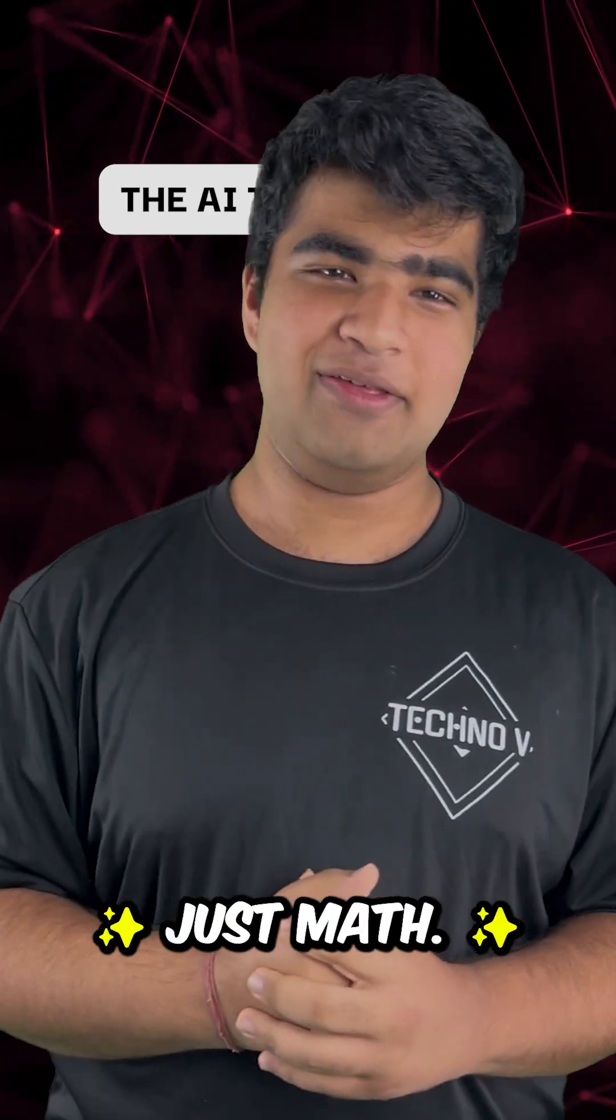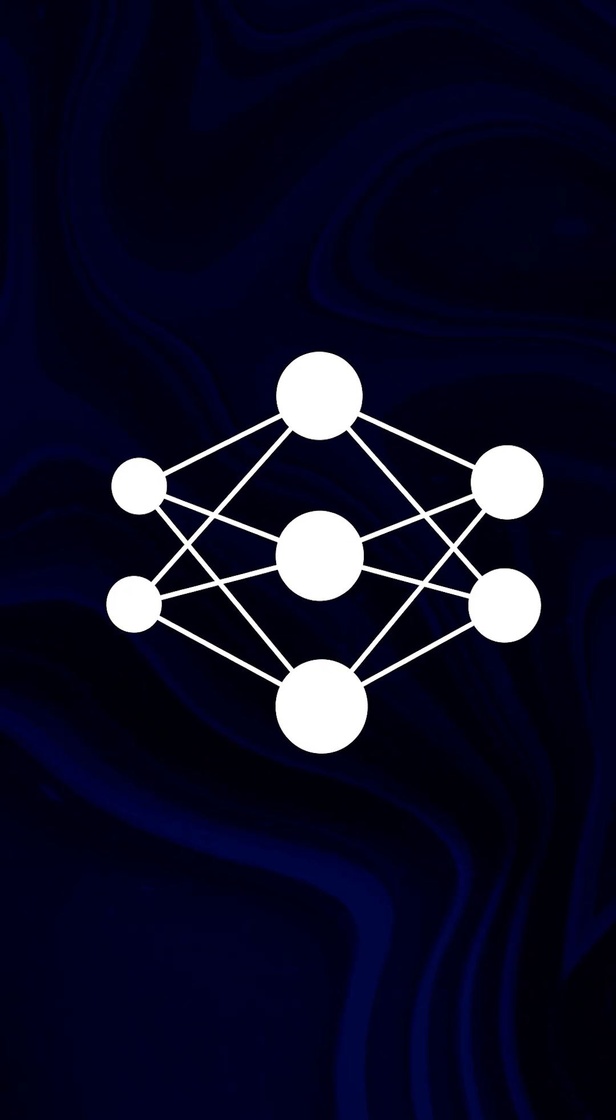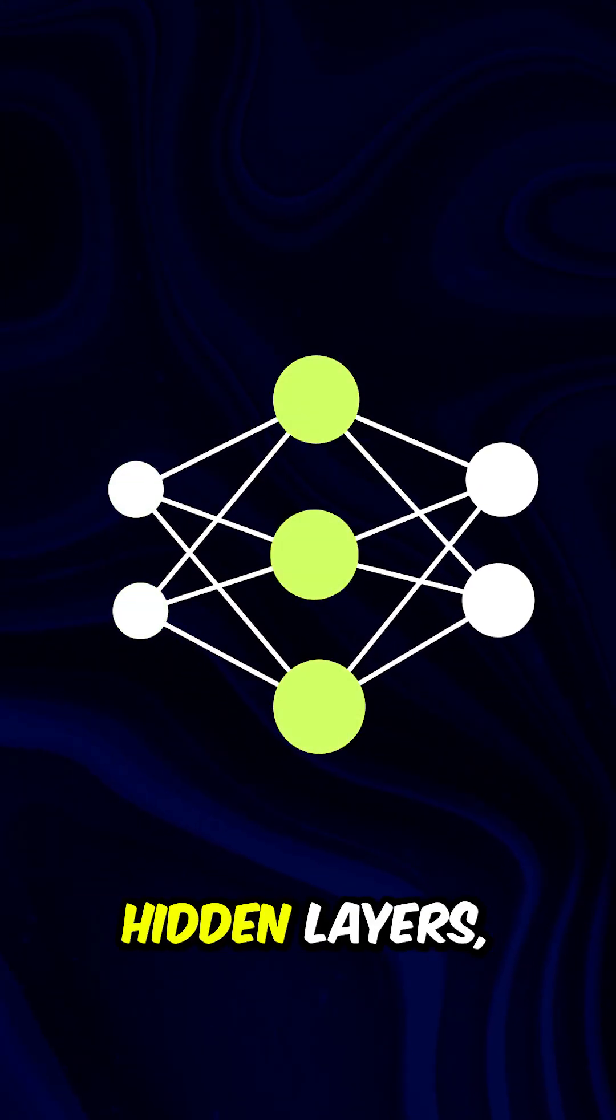AI is just math. Neural networks, the backbone of AI models, are just stacks of layers. Input layers, hidden layers, output layers.